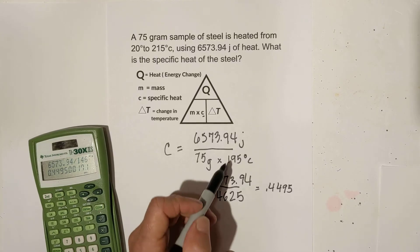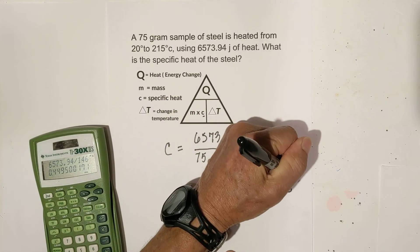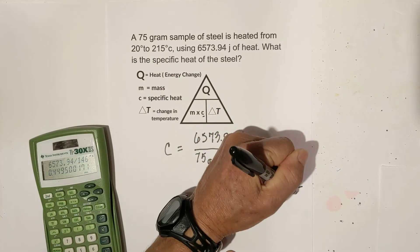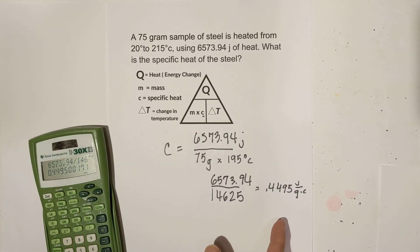So let's see what cancels. Actually nothing cancels. So it's joules over grams times Celsius, and that is what specific heat actually is. And that's not, c is not specific heat. That's Celsius. Sorry. So there we go.